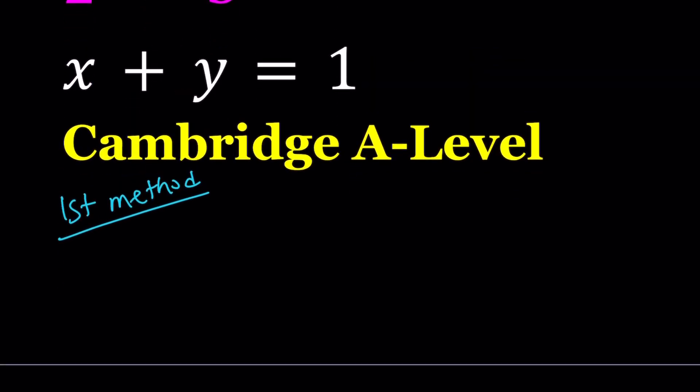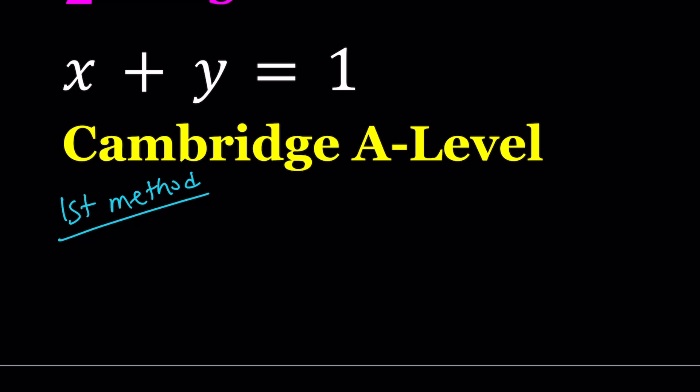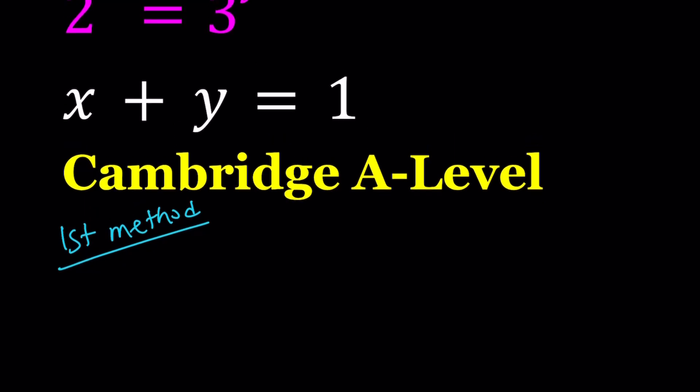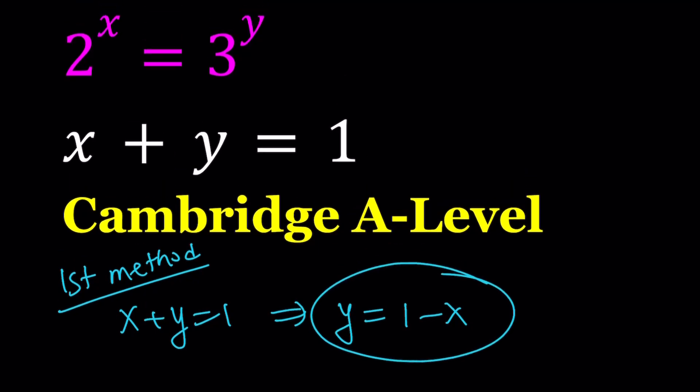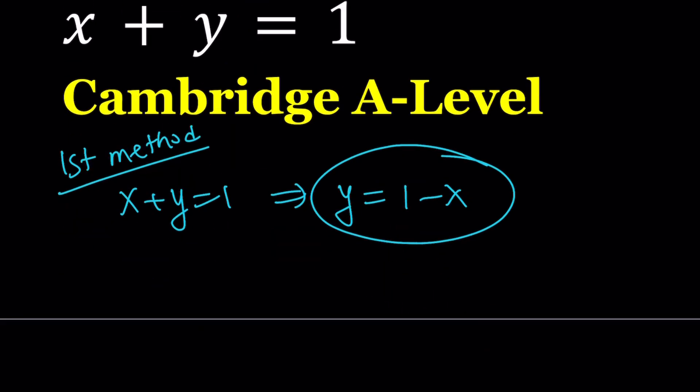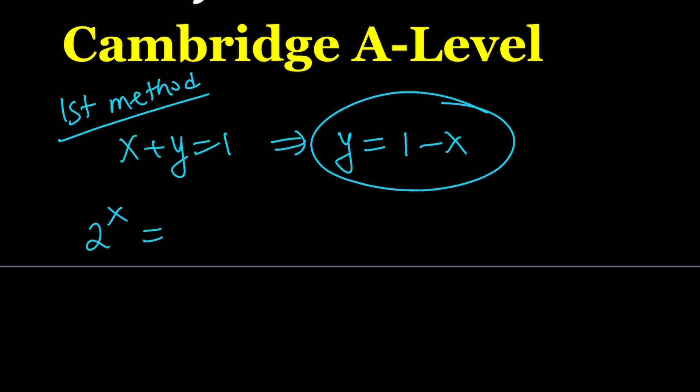So for my first method, since we were given that x plus y is equal to 1, I'm going to isolate one variable from there. Subtract x, so I can write y as 1 minus x, and I'm going to plug it in here. So we have 2 to the x equals 3 to the power y. Replace y with 1 minus x.